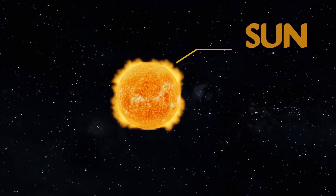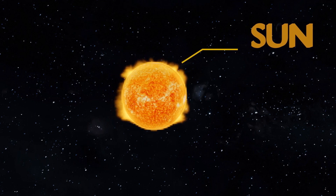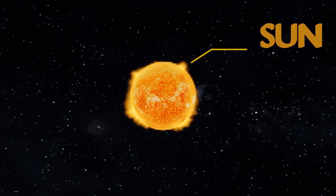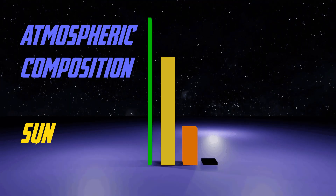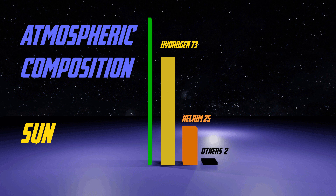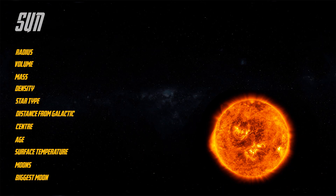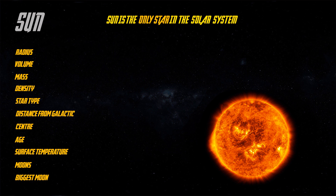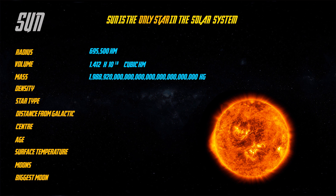The Sun is the only star of our solar system. Its atmosphere is mainly made up of hydrogen and helium. The Sun is a yellow dwarf type star and was formed 4.5 billion years ago. It has a surface temperature of up to 5500 degrees Celsius.